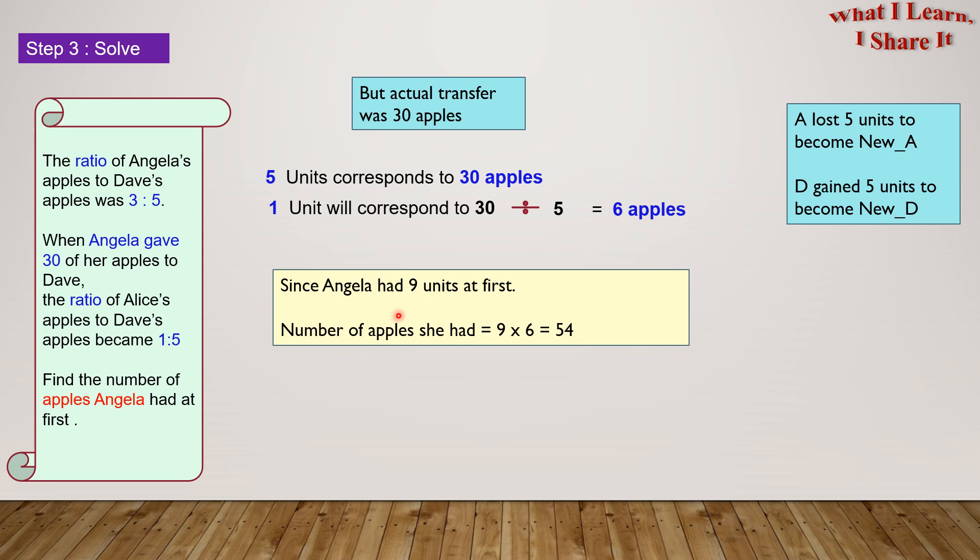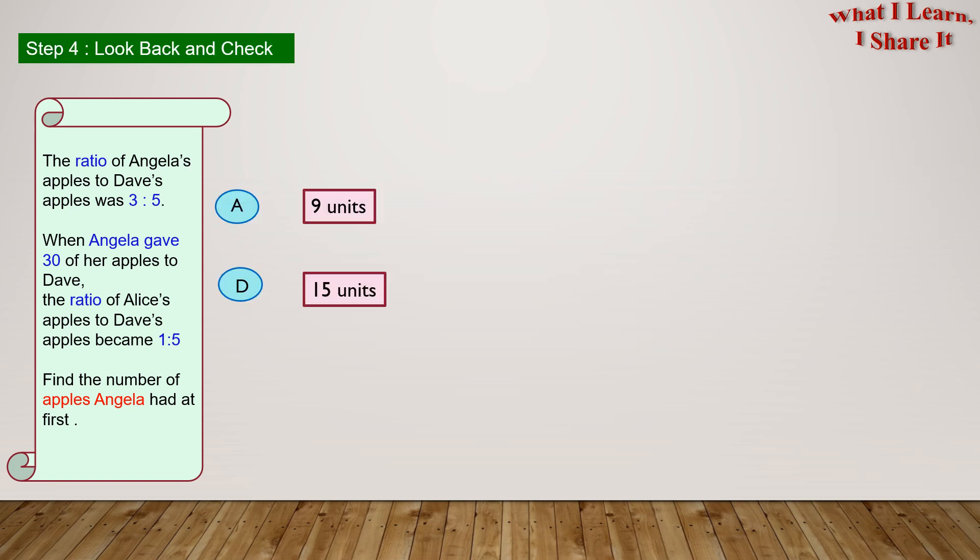Since Angela had 9 units at first, the number of apples she had equals 9 times 6 equals 54. So Angela had 54 apples at first! Yay! We solved the problem!